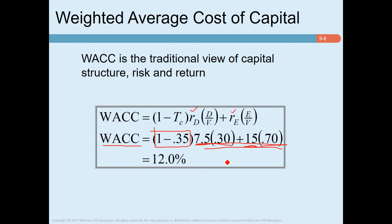Without adjusting for taxes, the WACC computes to 12.75%. However, since interest is a tax-deductible item, we include a (1 − tax rate) factor to remove the tax advantage from the cost of debt. After including this tax advantage of debt, the weighted average cost of capital becomes 12% instead of 12.75%.